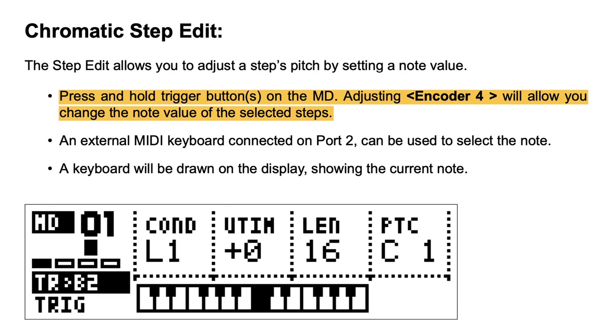Just hold down the trick you want to change and turn encoder number four to dial in the note value you want to have.